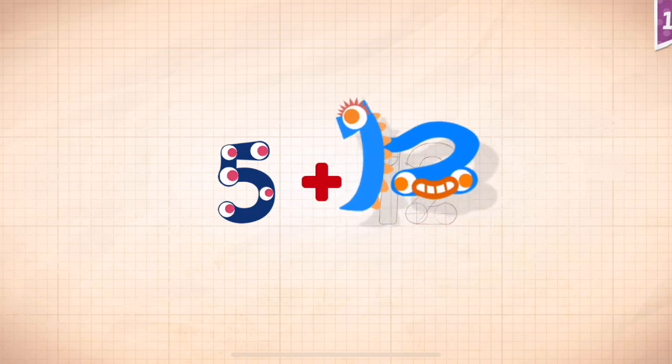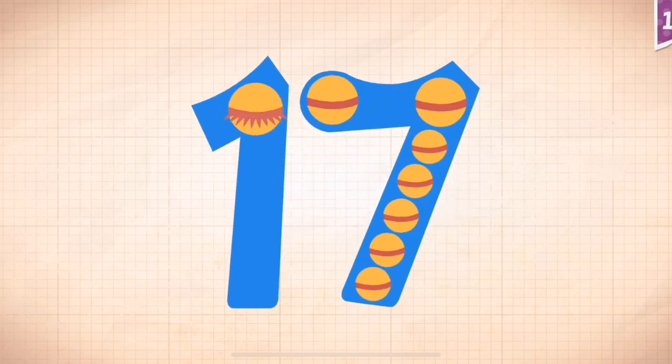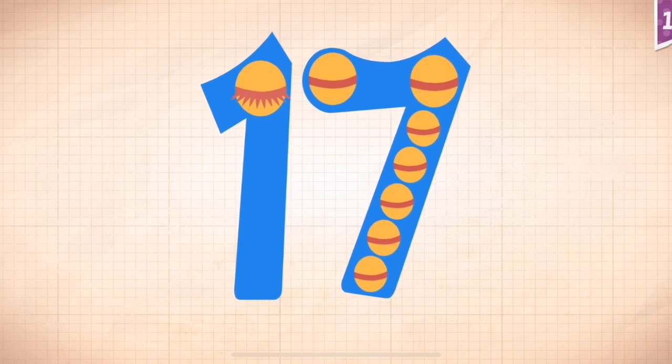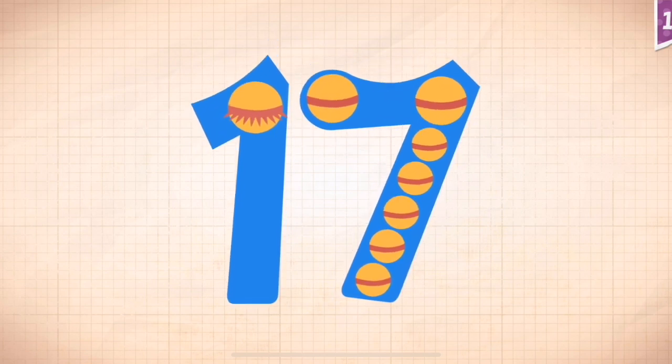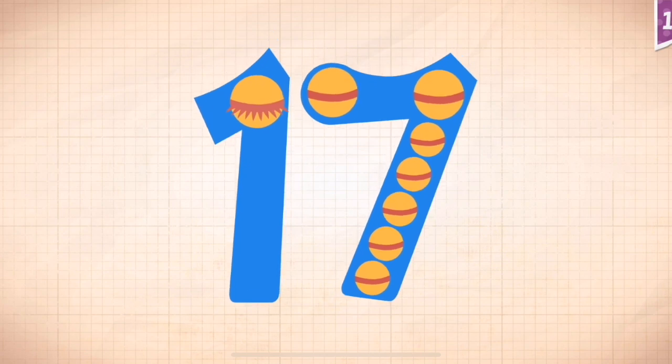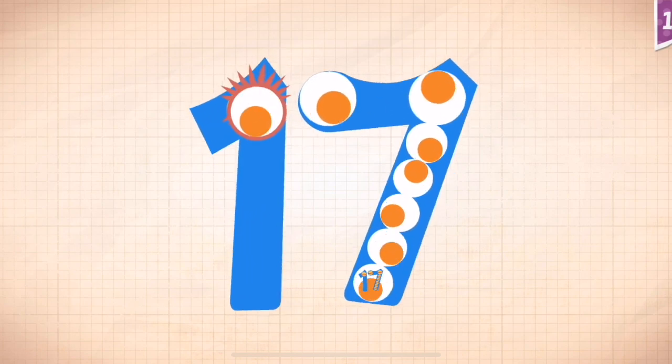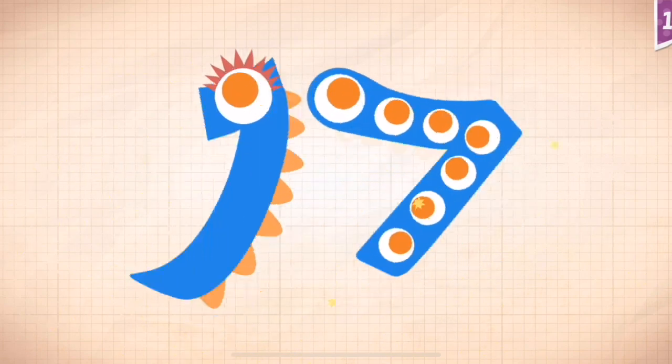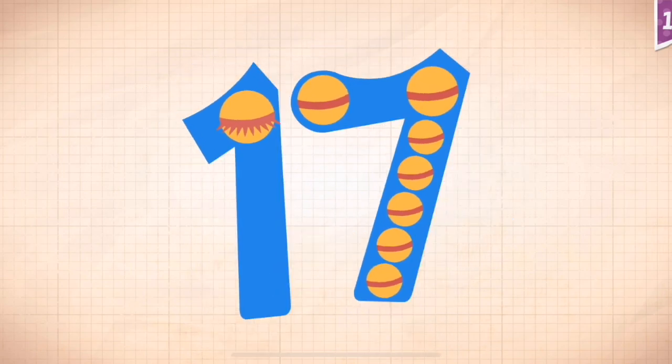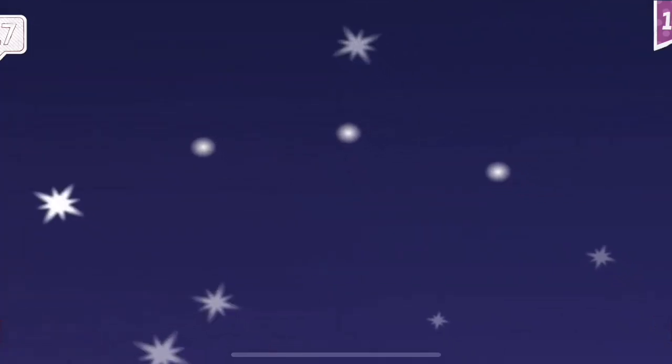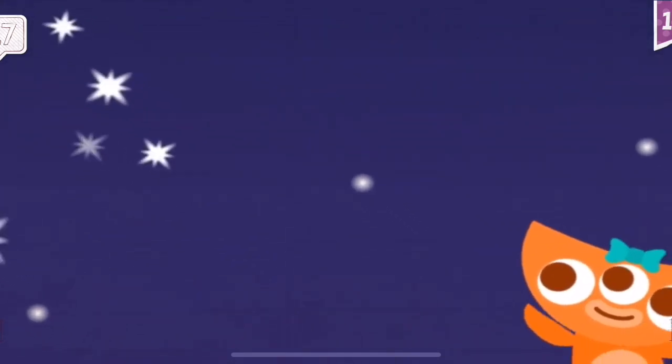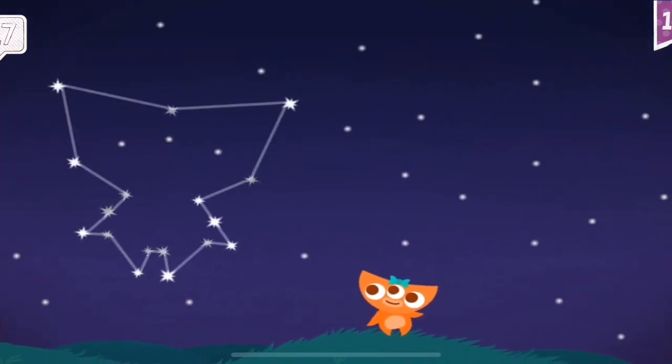5 plus 12 equals 17. Touch the monster's eyes to wake it up. 10, 11, 12, 13, 14, 15, 16, 17. Abby found a constellation of 17 stars that was all her own.